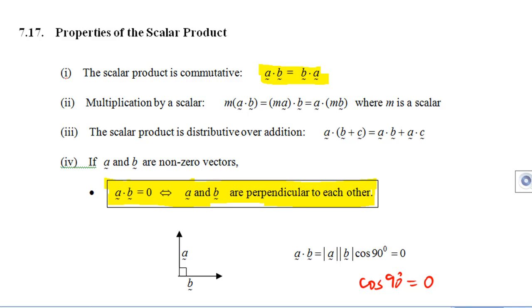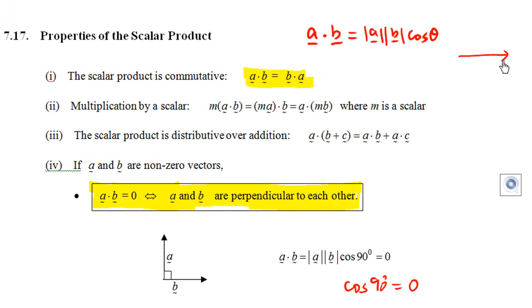We should expect this because a dot b is the magnitude of a times the magnitude of b cosine theta, where theta is the angle between a and b. And if you do b dot a, it will be the magnitude of b times magnitude of a followed by cosine theta, where theta is the angle between b and a, which is the same as the angle between a and b.